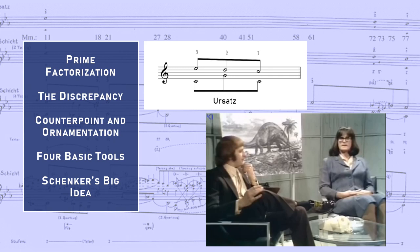All Schenker's Ursatz is really saying is that a piece of tonal music will begin in the tonic, have a dominant chord somewhere in the middle, and end in the tonic again. I think a lot of teachers overemphasize the importance of the Ursatz for students new to Schenkerian analysis, and I won't return to this idea until the final video in the series, when, hopefully, we will be better prepared to understand why it isn't quite as trivial as Anne Elk's theory.